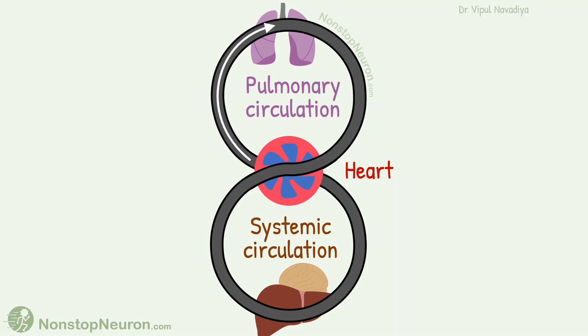From the heart, it goes to the lungs. Then it goes back to the heart and gets pumped into the systemic circulation. Again it comes back to the heart and the loop is repeated.